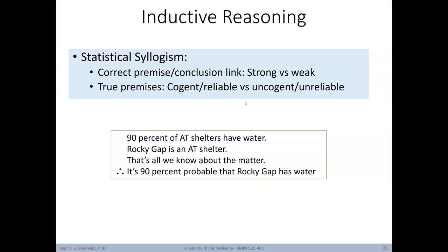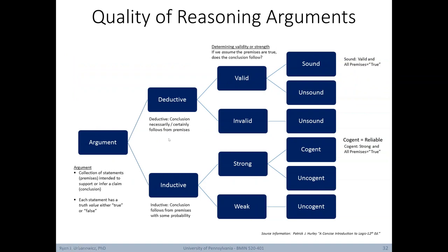Here's an example of a statistical syllogism using inductive reasoning. Premises: '90% of Adirondack Trail shelters have water. Rocky Gap is an Adirondack Trail shelter. That's all we know about the matter.' Therefore, it's 90% probable that Rocky Gap has water. Here we're drawing a conclusion associated with a certainty level. A flowchart lays out the differences: deductive arguments can be valid or invalid, and sound or unsound; inductive arguments can be strong or weak, and cogent or uncogent, where cogent describes reliability.